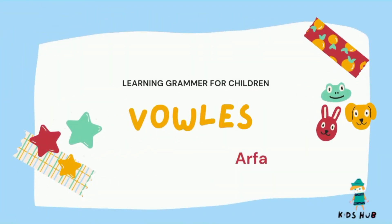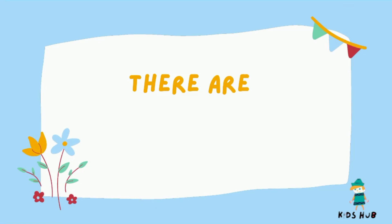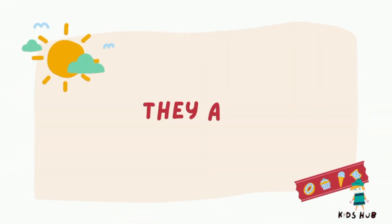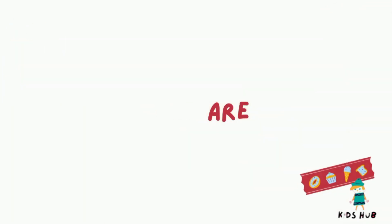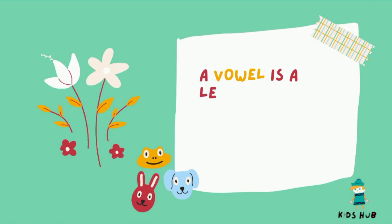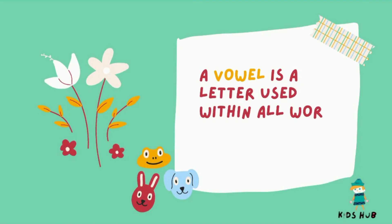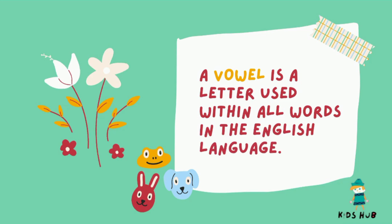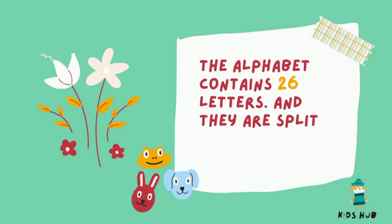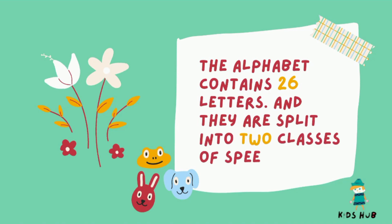Hi guys, welcome to my channel. Today we're going to see about vowels. There are five vowels in the English alphabet: A, E, I, O, U. A vowel is a letter used within all words in the English language. The alphabet contains 26 letters, and they all split into two classes of speech.